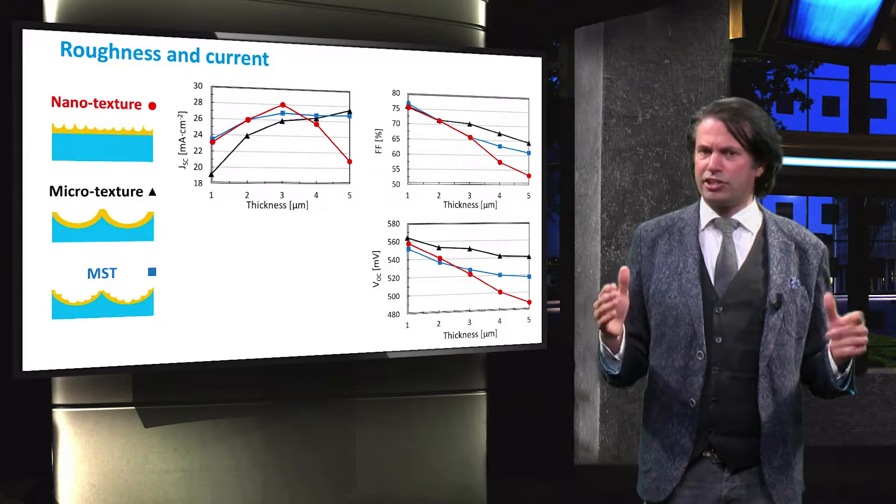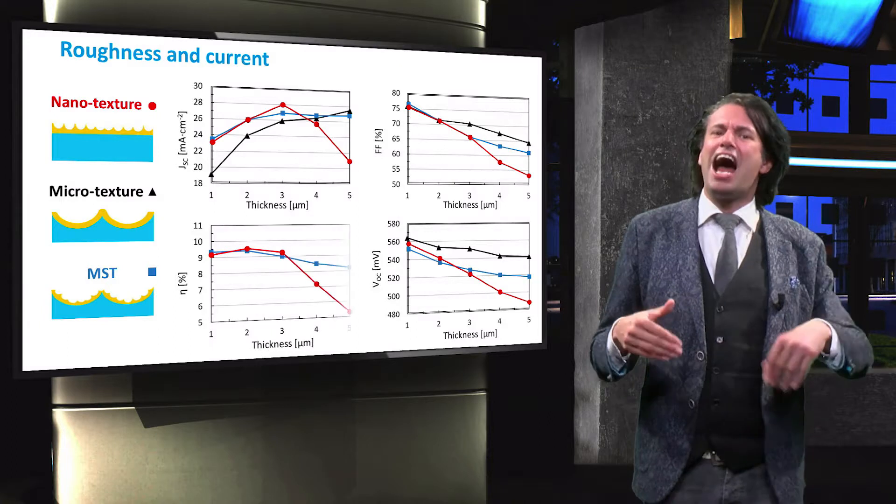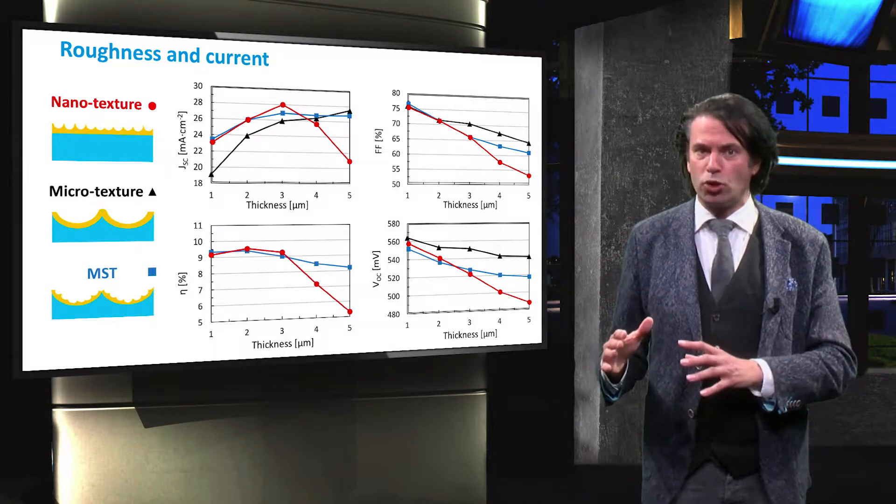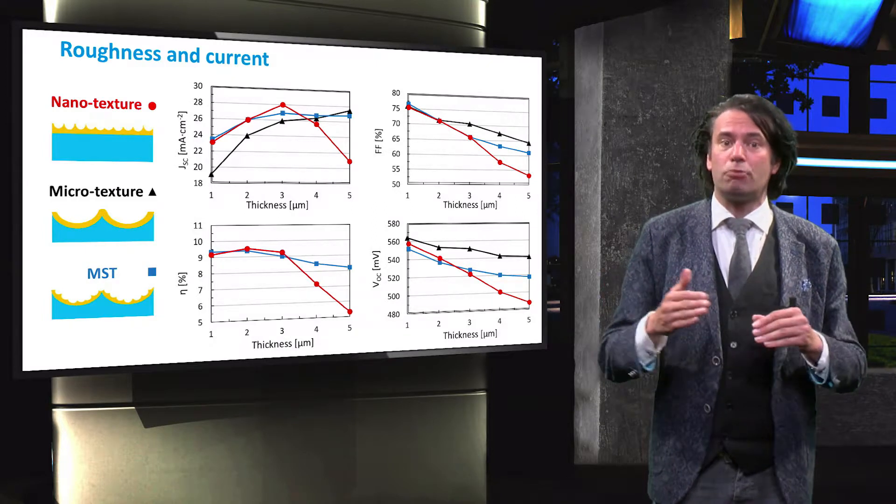Since the nanotexture is effective at trapping the light, these cells have a relatively high efficiency at a low absorber layer thickness, but the efficiency hardly increases for thicker absorber layers.